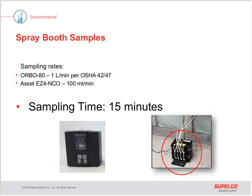Sampling details for the two different types of samplers: for the Orbo 80 filter cassette, a flow rate of 1 liter per minute was used per OSHA 4247. For personal sampling, Zefon Escort Elf pumps were used. For area sampling, two four-channel R&D prototype sampling pumps were used, since we were taking many samples simultaneously. All acid samplers were calibrated using a BIOS Definer 220, and all Orbo 80 samplers were calibrated using an APBUCK M5. Sampling time for this test was 15 minutes.